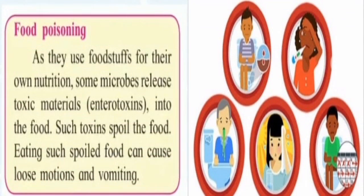Food Poisoning: When some microbes grow in food, they produce a toxic compound called endotoxin. This toxin makes the food poisonous. If such spoiled food is consumed, it results in vomiting and loose motions. A round layer of white scum or black particles on the food is an indication of fungal growth. Fungus grows quickly on moist and stale food.